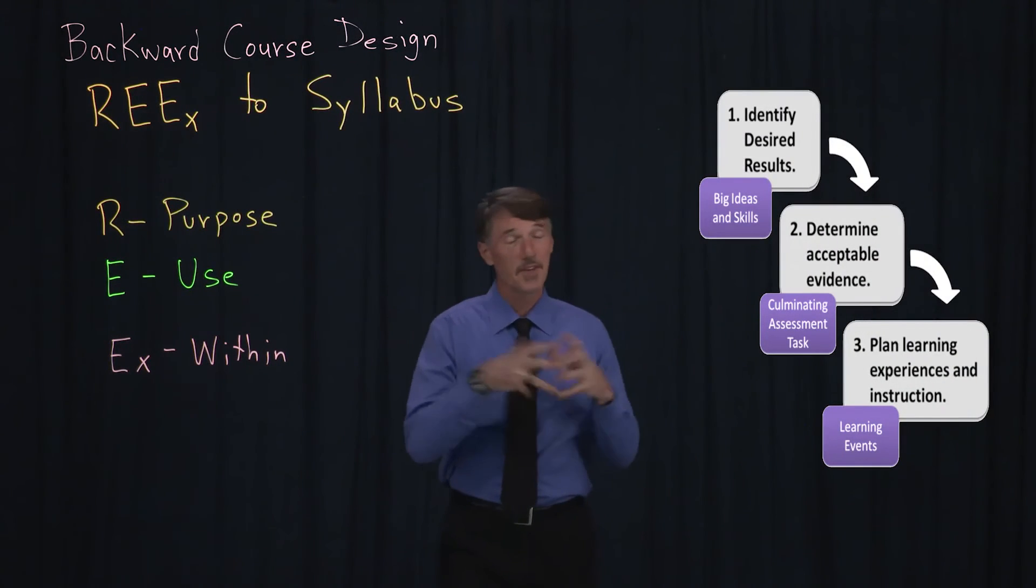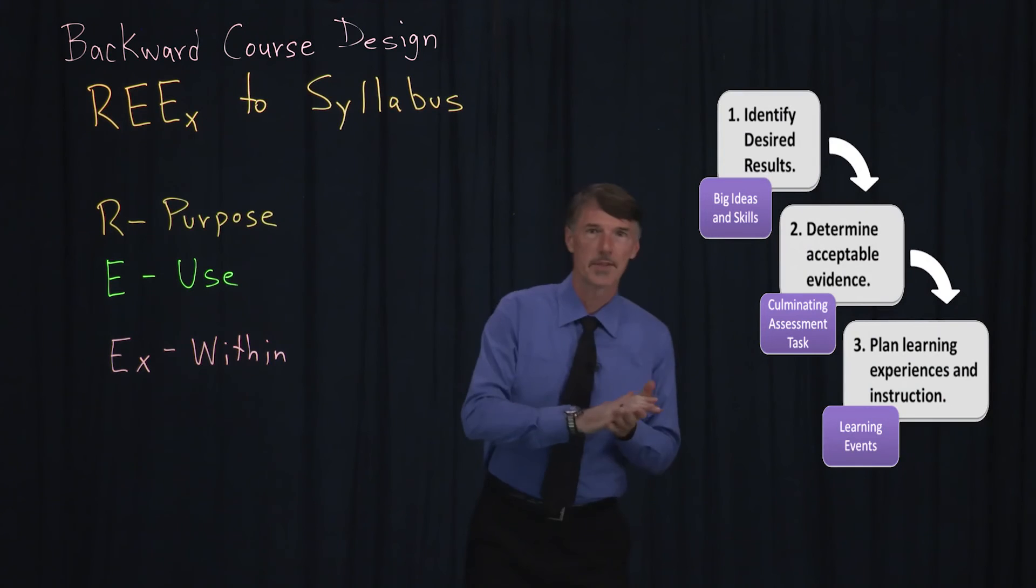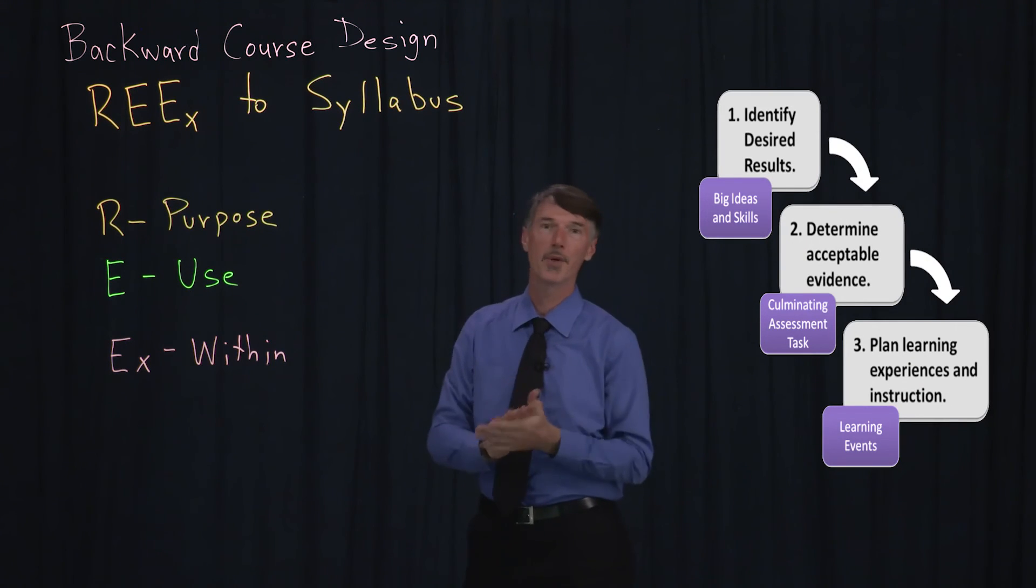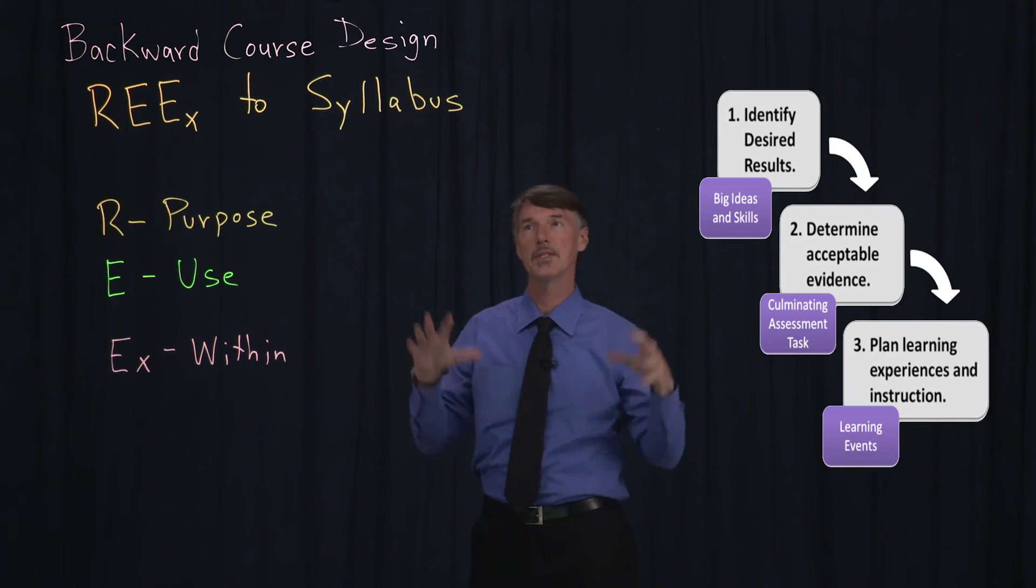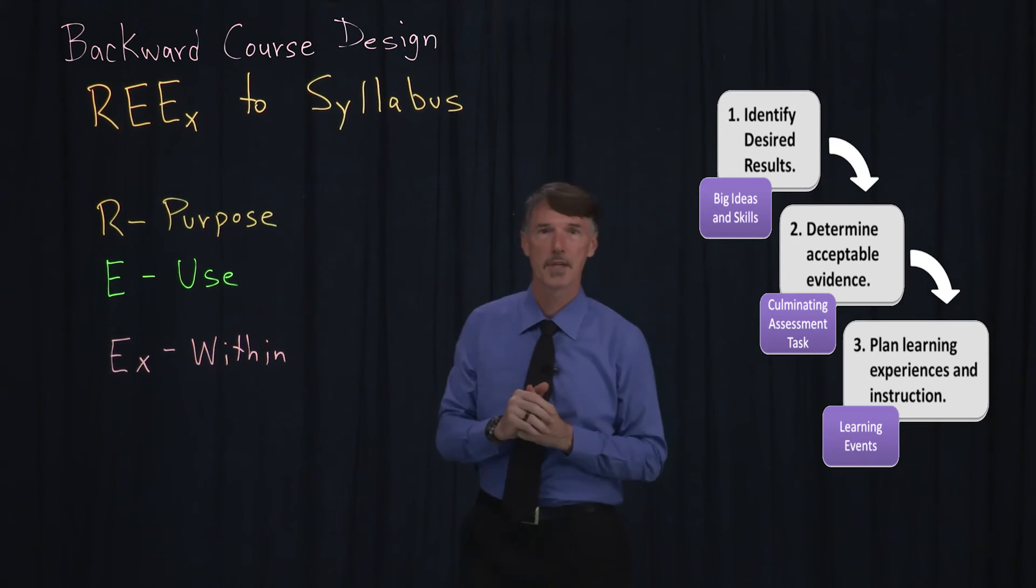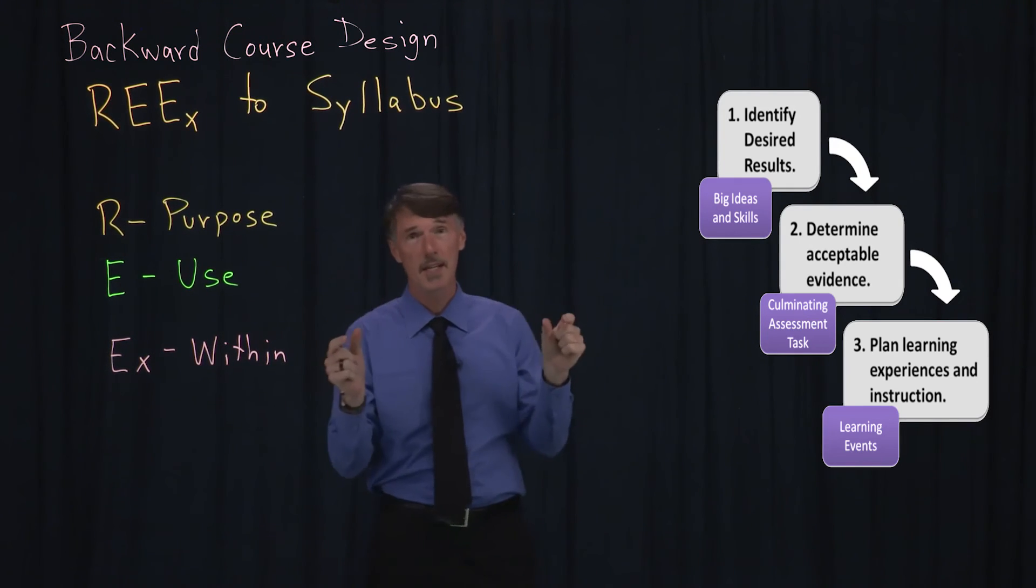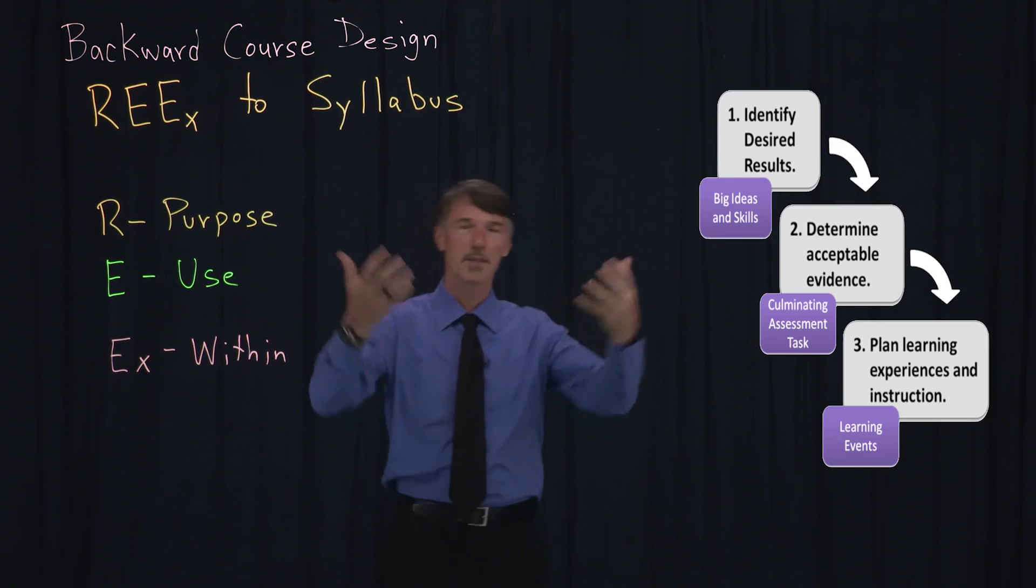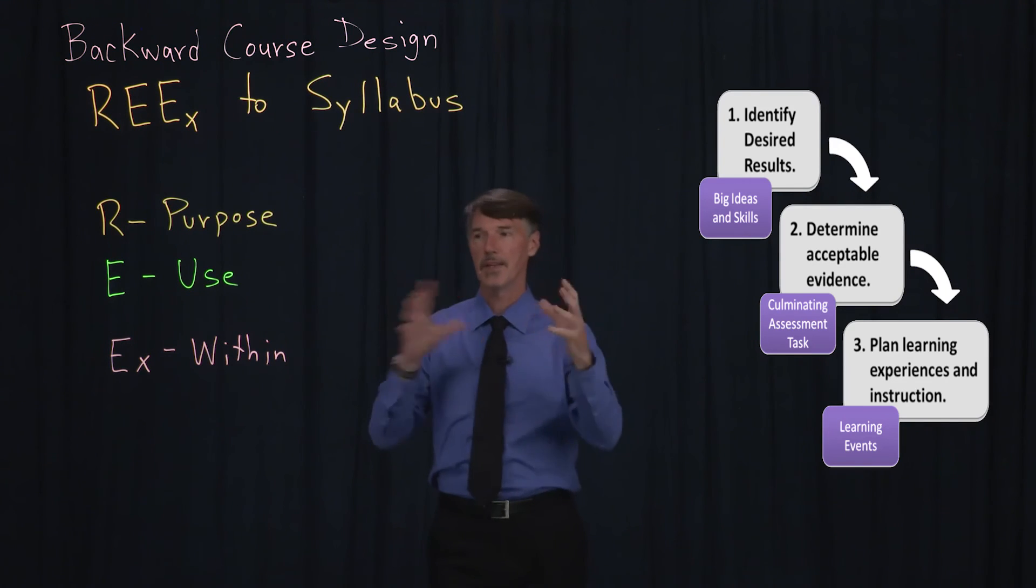So in a nutshell, very briefly, that was the course design using the Wiggins and McTighe backward design. The final point that I'd like to make is that you can actually use this to design your syllabus. And in fact, we just did a lot of the syllabus. If you think about your outcomes, which tend to go inside of your syllabus, and then if you look at the assessments, those can go inside your syllabus, and then the active learning techniques, those can go inside your course schedule.